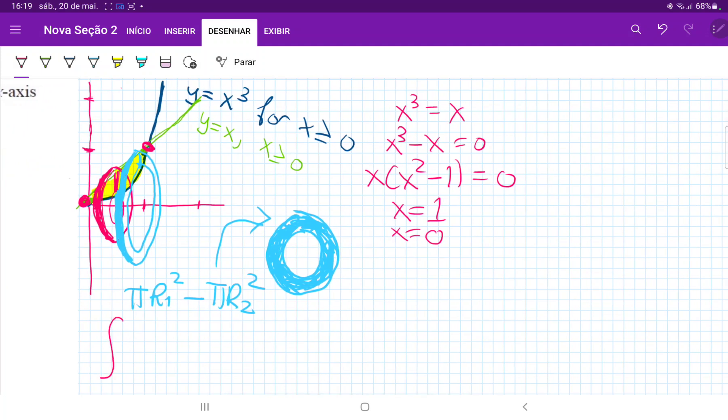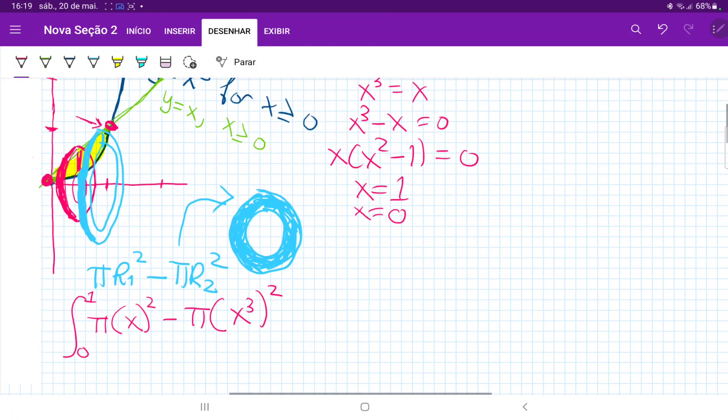So let's set up our integral. It is the integral from zero to one of pi R1 squared minus pi R2 squared. The biggest is the one in green, it is the upper boundary here. So we have X squared minus pi times the second curve, the smallest is X cubed squared. So let's just put the pi outside. So this is equal to pi times the integral from zero to one of X squared minus X cubed squared is X to the power of six.